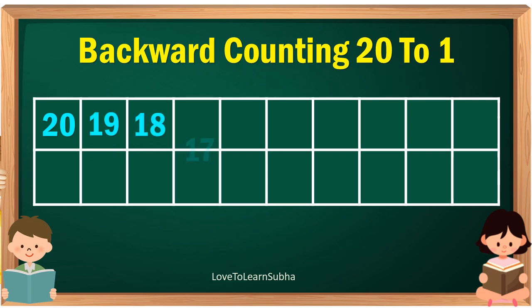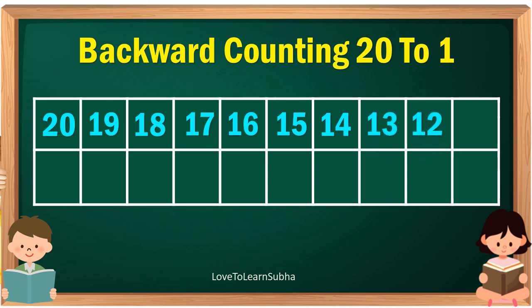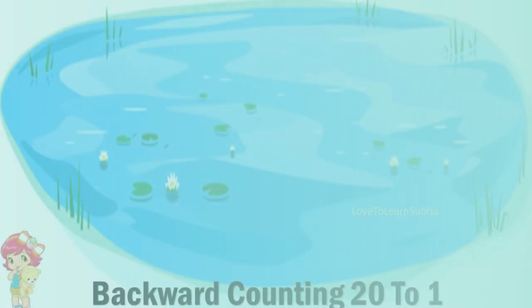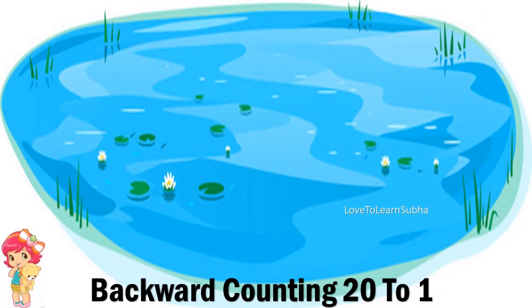19, 18, 17, 16, 15, 14, 13, 12, 11, 10, 9, 8, 7, 6, 5, 4, 3, 2, 1. Now let's do the backward counting from 20 to 1 with the help of ducks.